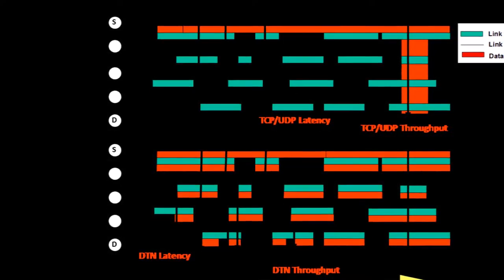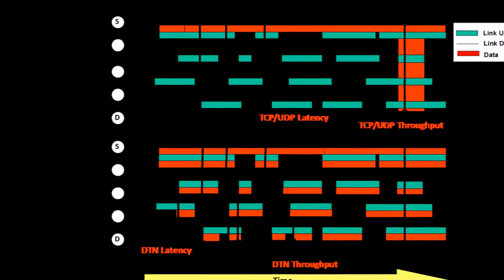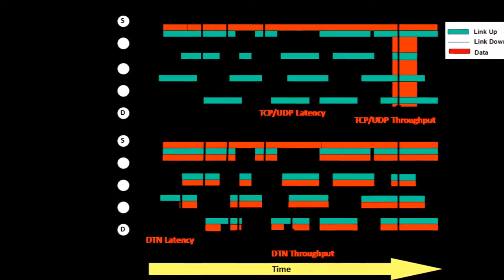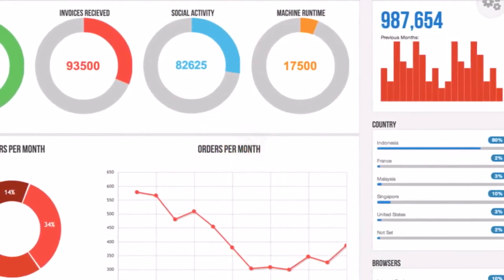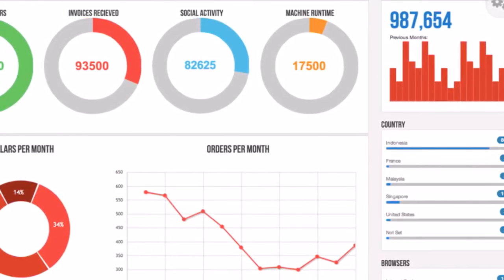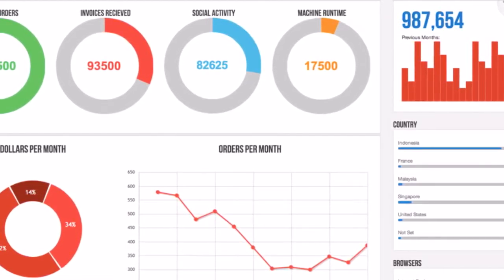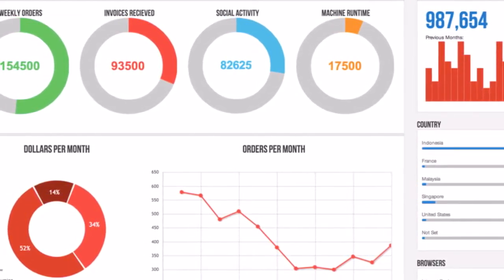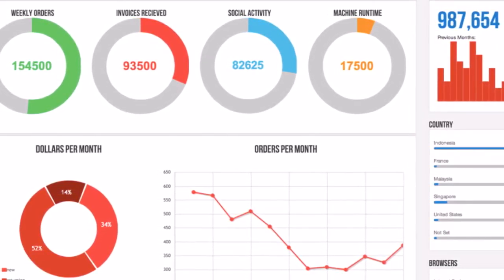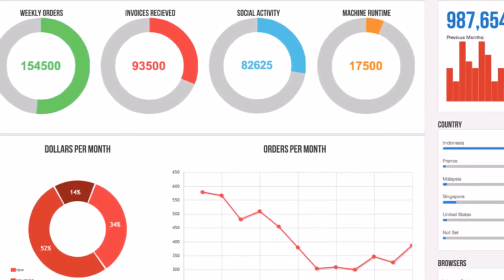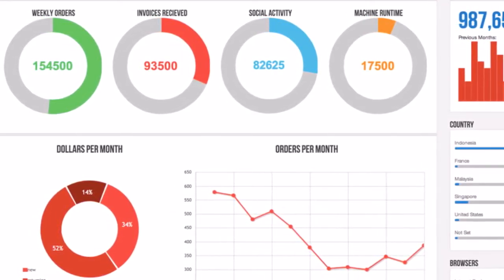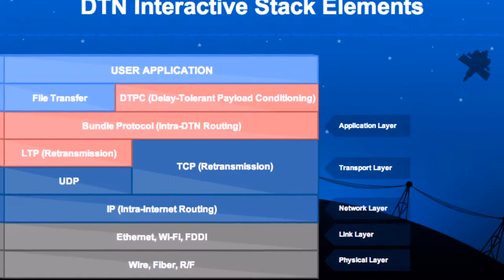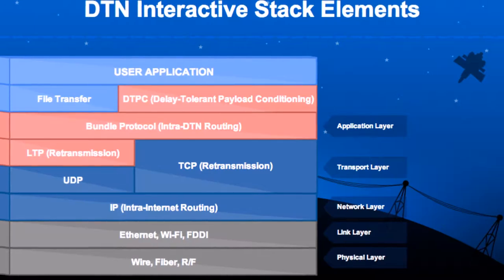Bagaimana DTN bekerja? Citra konsep yang menggambarkan jaringan toleransi gangguan. Protokol jaringan toleransi gangguan akan memungkinkan Solar Sistem Internet, yang memungkinkan data disimpan dalam node sampai transmisi berhasil. DTN adalah model jaringan komputer dan sistem peraturan untuk mentransmisikan informasi, sering disebut sebagai suite protokol, yang memperluas kemampuan internet terestrial ke dalam lingkungan komunikasi yang menantang, di tempat di mana internet konvensional tidak berjalan dengan baik. Lingkungan ini biasanya sering mengalami gangguan, tautan yang terbatas pada satu arah, kemungkinan penundaan yang lama dan tingkat kesalahan yang tinggi.